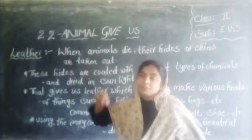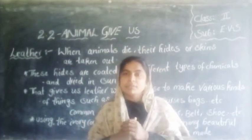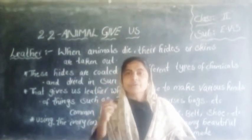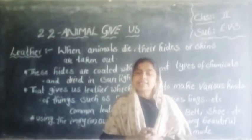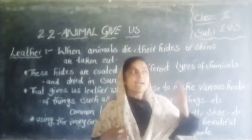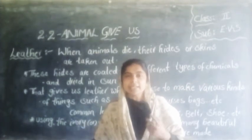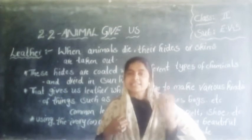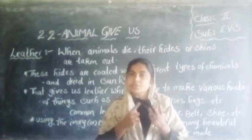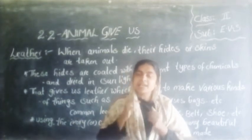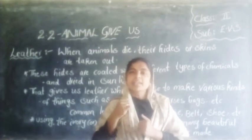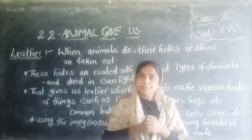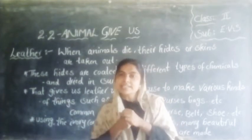Leather. When animals die, their hides or skin are taken out. These hides are coated with different types of chemicals and dried in sunlight. That gives us leather, which we use to make various kinds of things, such as shoes, belts, and bags. Using the ivory, or outer teeth of elephants, many beautiful decorative articles are made.